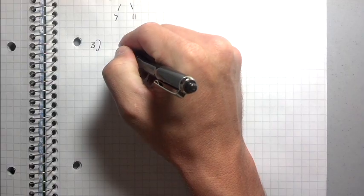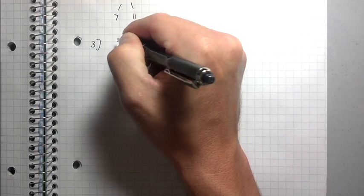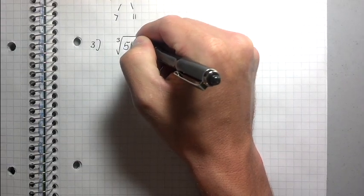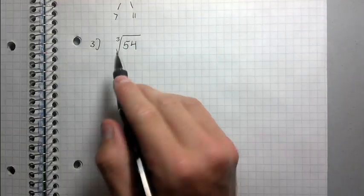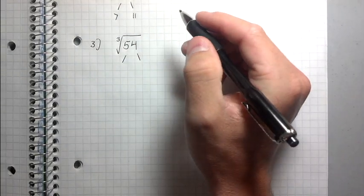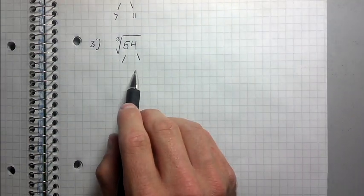What is the cube root of 54 written in a more simplified format? So I'm going to do the same thing. I'm going to first start off by breaking down 54 into its constituent prime factors.